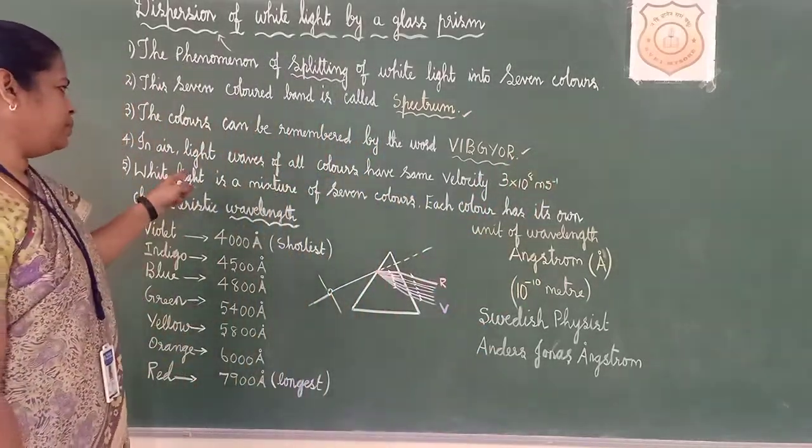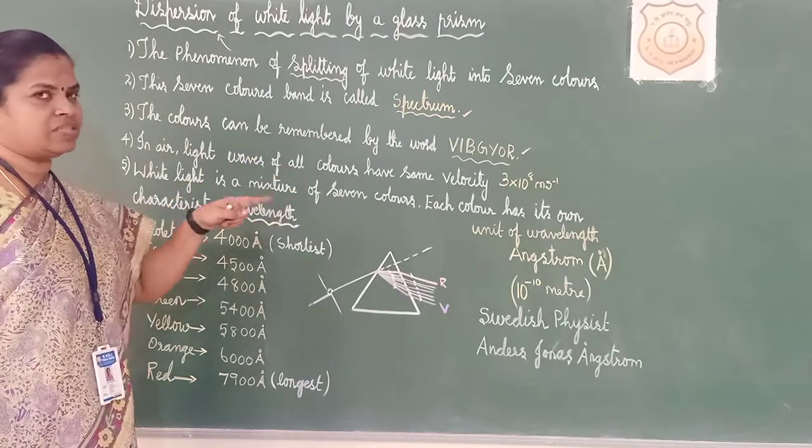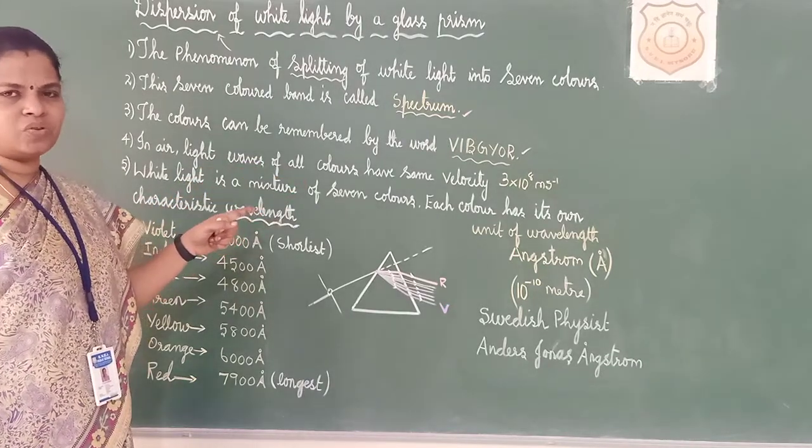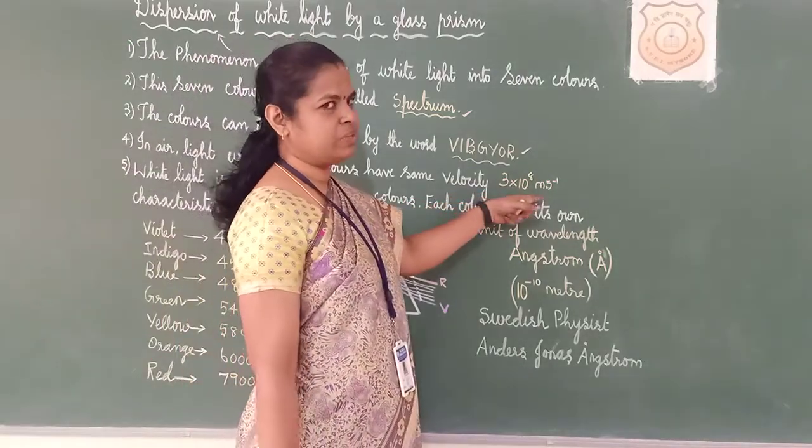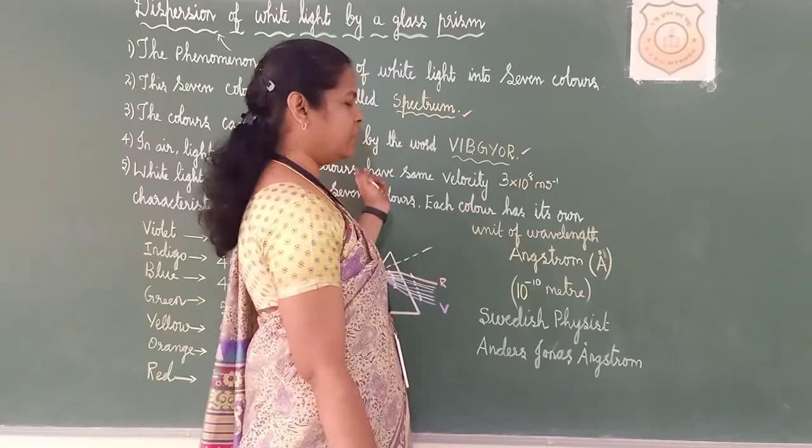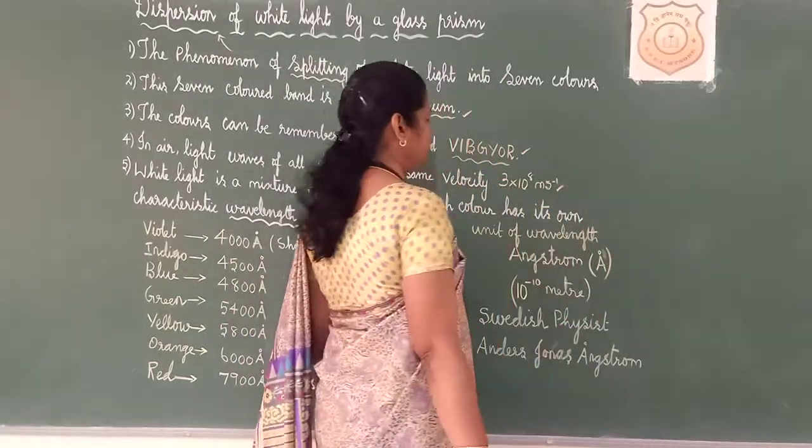In air, the light waves of all colours have same velocity. We have studied about this. Same velocity. Velocity we have studied, 3 times 10 to the power of 8 metres per second. In air or vacuum, it will be the same, 3 times 10 to the power 8 metres per second.